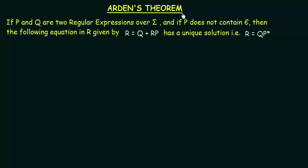In this lecture, we will be studying about Arden's Theorem. This theorem is important when you deal with regular expressions, and it states that if p and q are two regular expressions over sigma, and if p does not contain epsilon, then the equation r = q + rp has a unique solution, that is r = qp*.